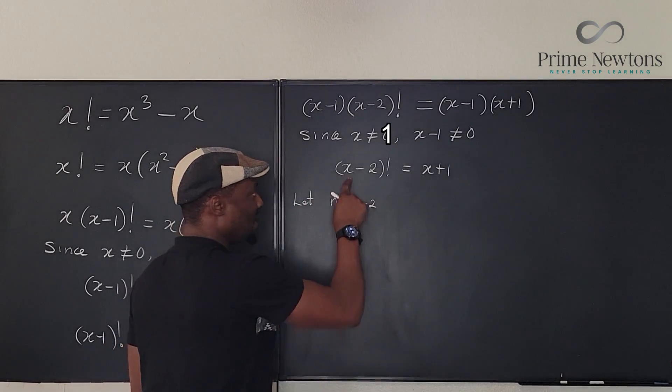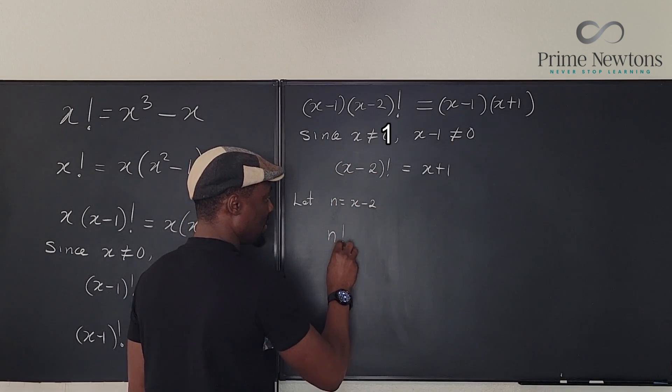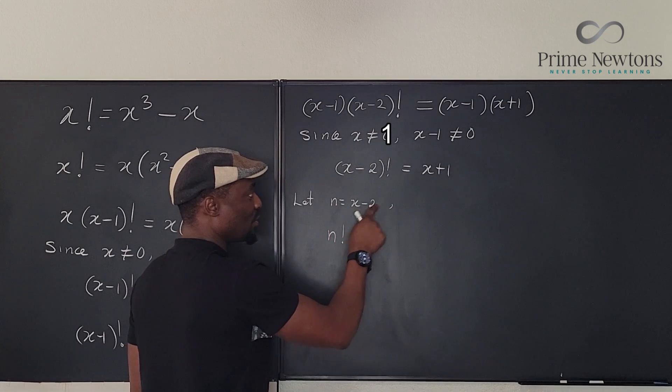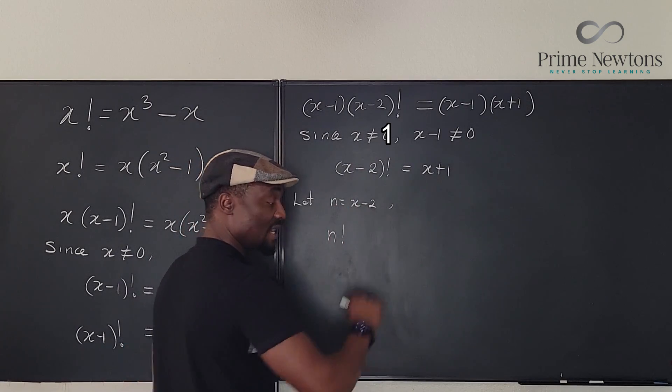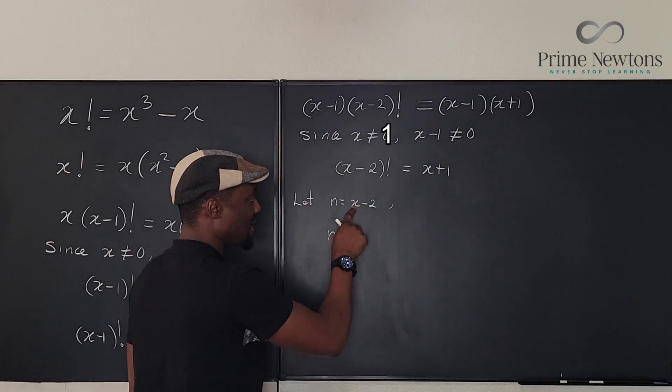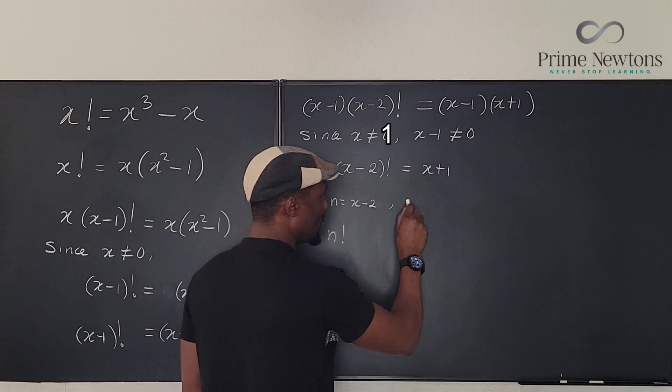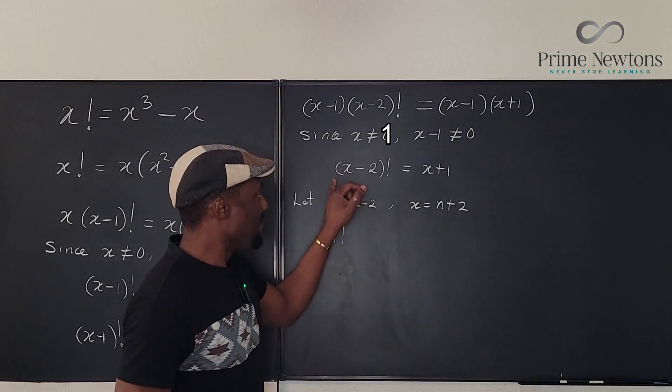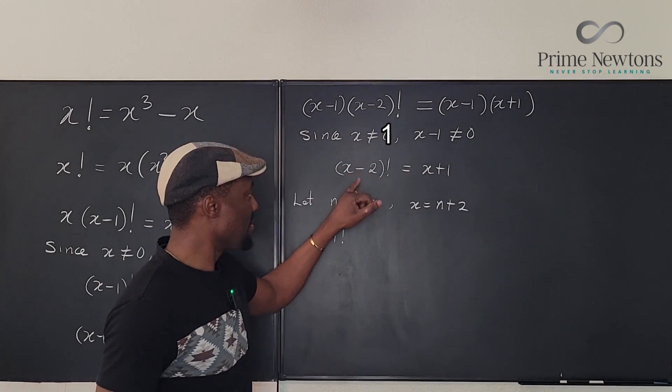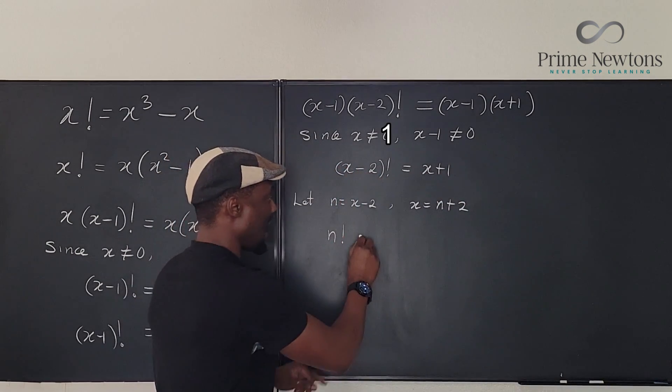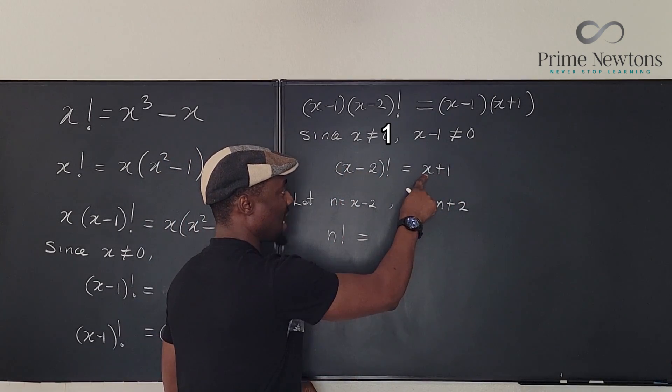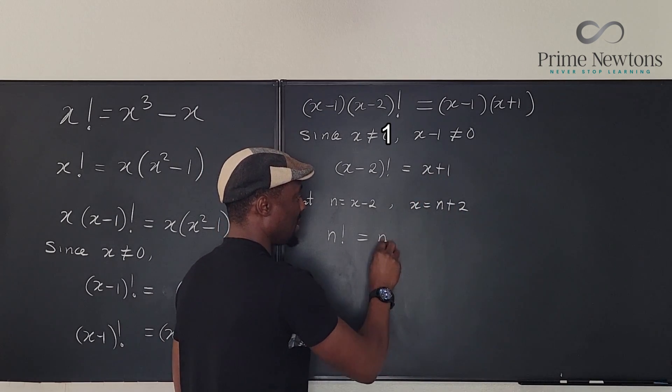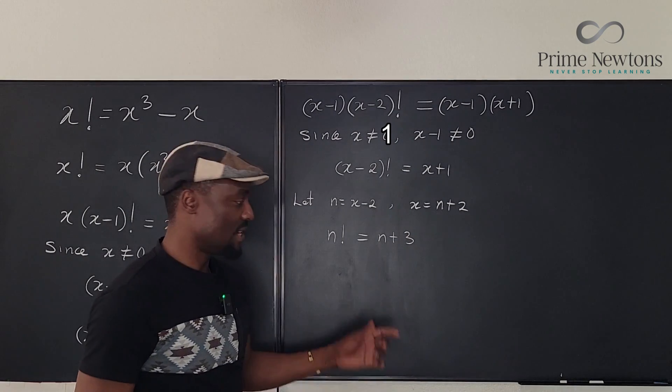So if we replace this, this is going to become n factorial. But if n is x minus 2, we need to replace this. So everything is in terms of n, then it means that x will be n plus 2. So it means that x equals n plus 2, which means if I want to rewrite this line, this is going to be n factorial. And the right hand side, we're going to replace x with n plus 2. So that n plus 2 plus 1 will become n plus 3. And in the previous video, this was where I said, okay, we might have to just try things out.